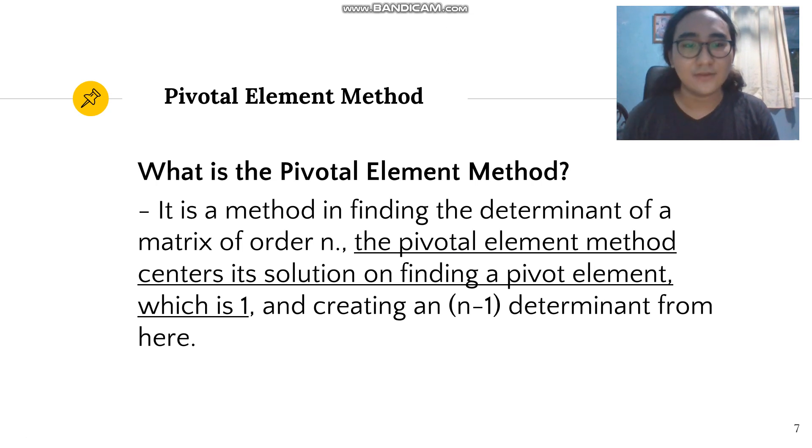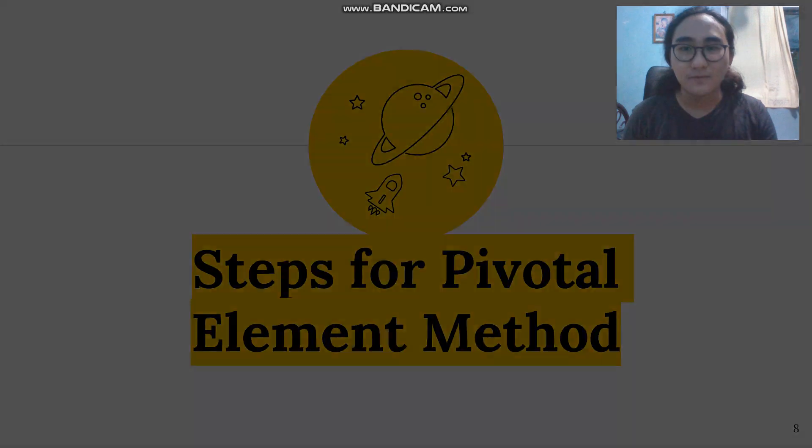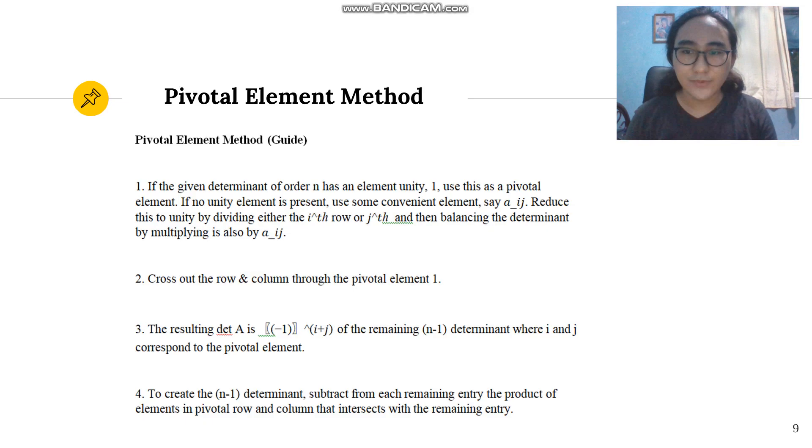It is a method in finding the determinant of a matrix of order n. The pivot element method centers the solution of finding a pivot element which is 1, creating an n minus 1 determinant from here. So we have steps here. You can pause the video to take a screenshot.